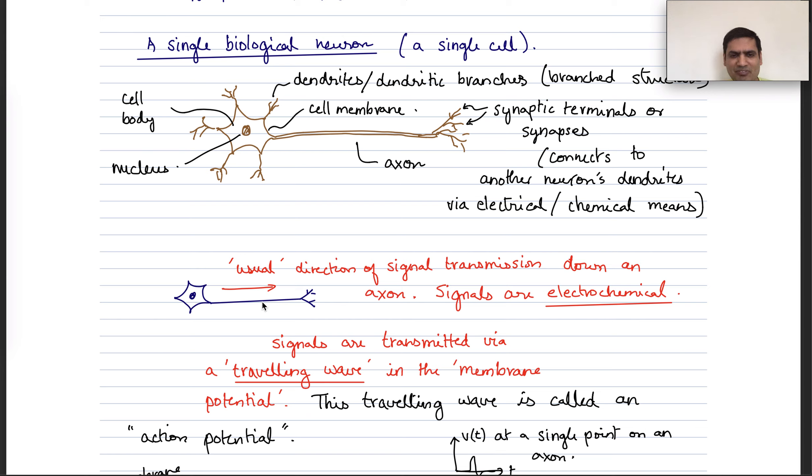So that's a single cell. How do they work? This is just a very high-level overview. This is the usual direction of signal transmission, although this is not exactly always the case. Signals are electrochemical. We can do a whole lecture on how signals are generated and transmitted. But essentially, there's an ionic imbalance between the inside and outside of the cell, and that ionic imbalance is actuated in a manner that a traveling wave is set up in this cable to transmit information.